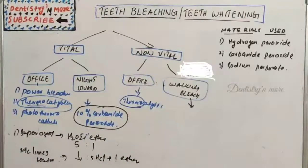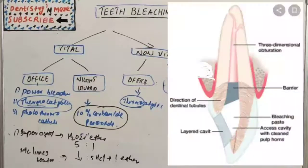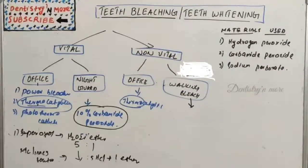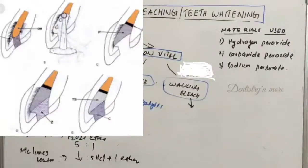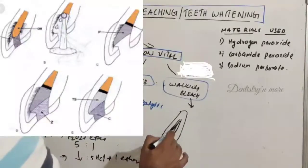The steps for walking bleach: first, take a radiograph to assess the quality of obturation. Evaluate the quality and shade of any existing restoration; if defective, replace it. Evaluate tooth color with a shade guide. Isolate the tooth with a rubber dam. Re-establish the access cavity, remove the coronal gutta-percha, expose the cavity, and refine the cavity.